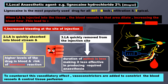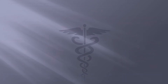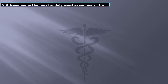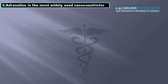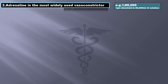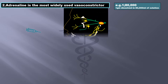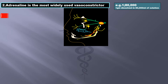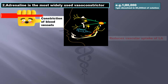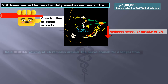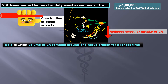To counteract this vasodilatory effect, vasoconstrictors are added to constrict the blood vessels and control tissue perfusion. Adrenaline is the most widely used vasoconstrictor, in a concentration of 1 in 80,000 — meaning 1 gram of the solute is dissolved in 80,000 ml of solution. It causes constriction of blood vessels, which reduces the vascular uptake of LA, so a higher volume of LA remains in the injected area around the nerve branch and for a longer time.